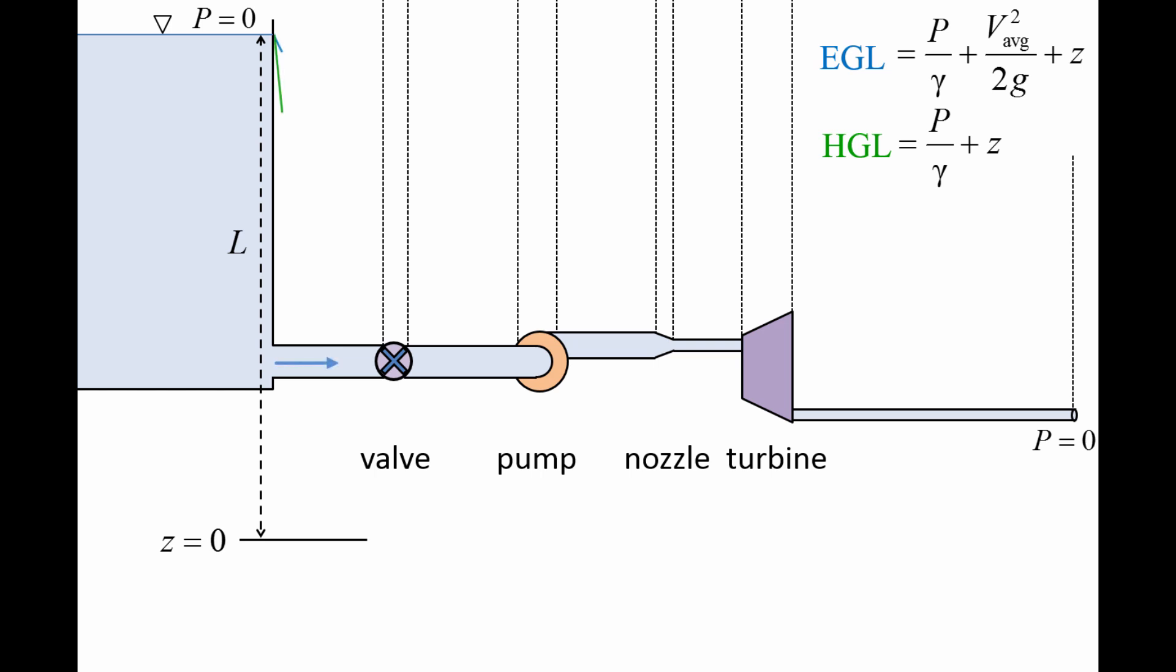When the liquid travels through the sharp-edged entrance into the pipe system, the liquid will gain velocity and will experience frictional loss due to separated flow at the entrance. The frictional loss causes a steep decline in the total mechanical energy, which is represented by a steep decline in the EGL.